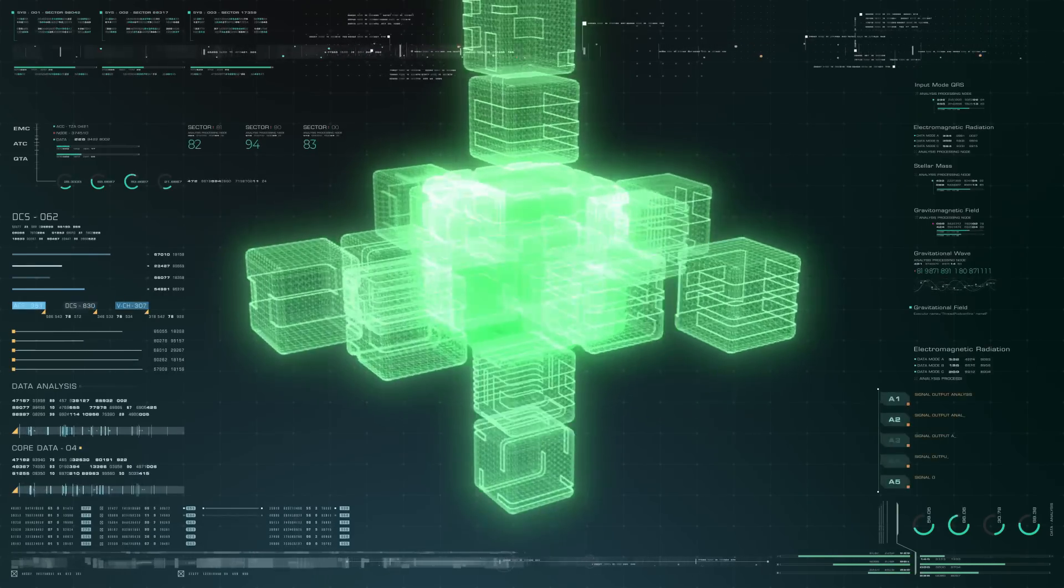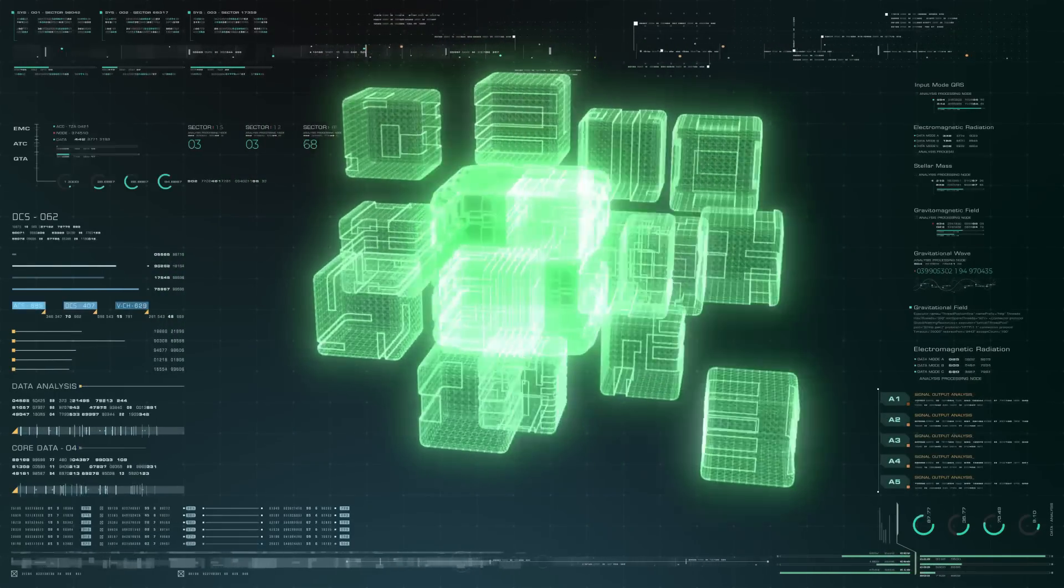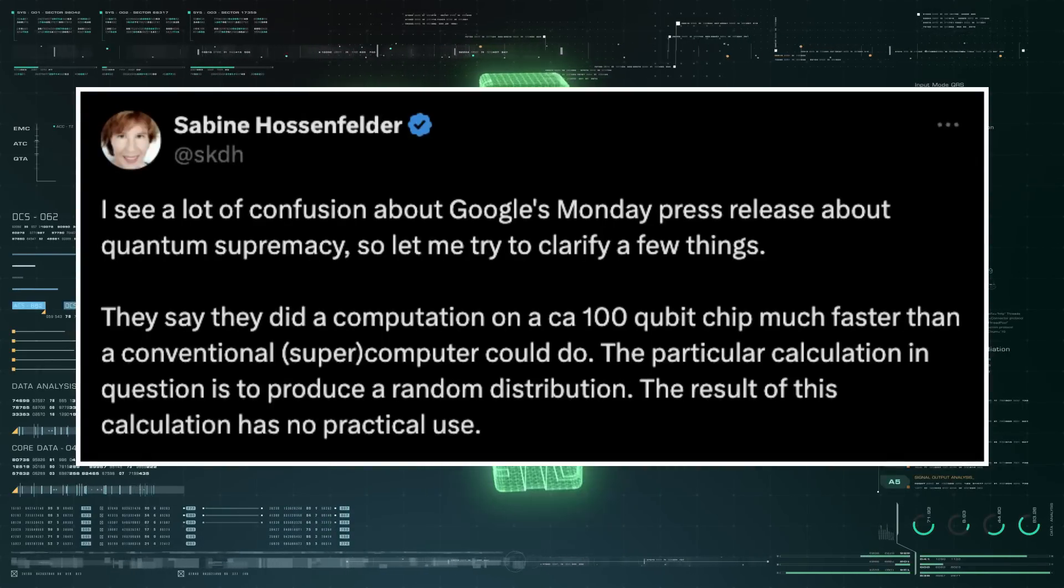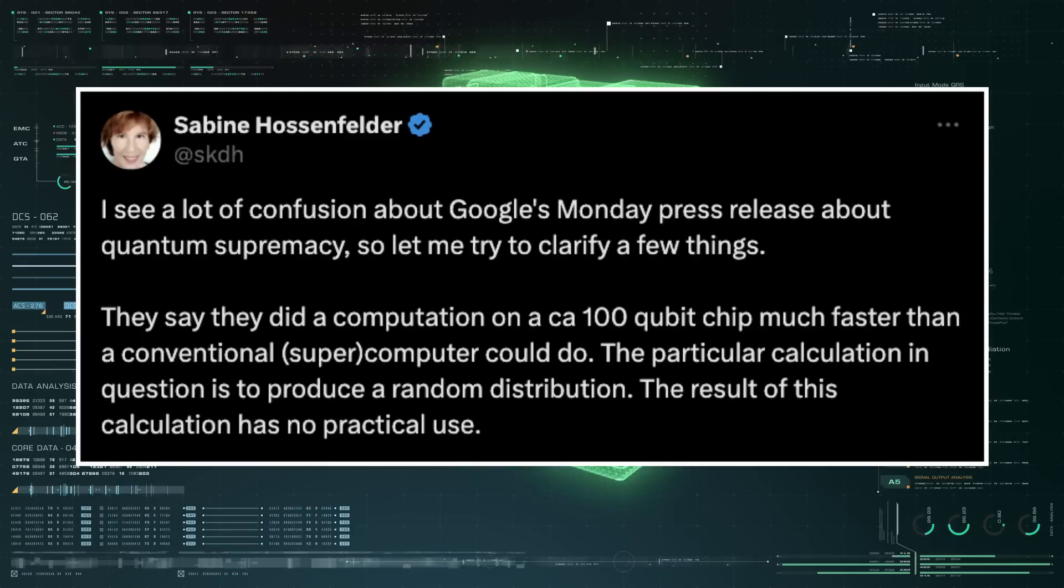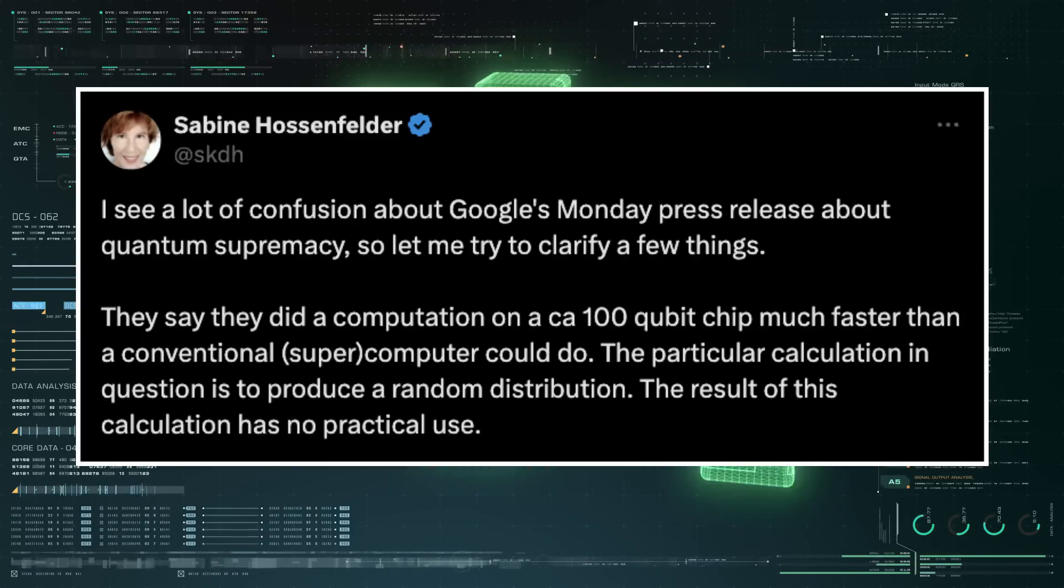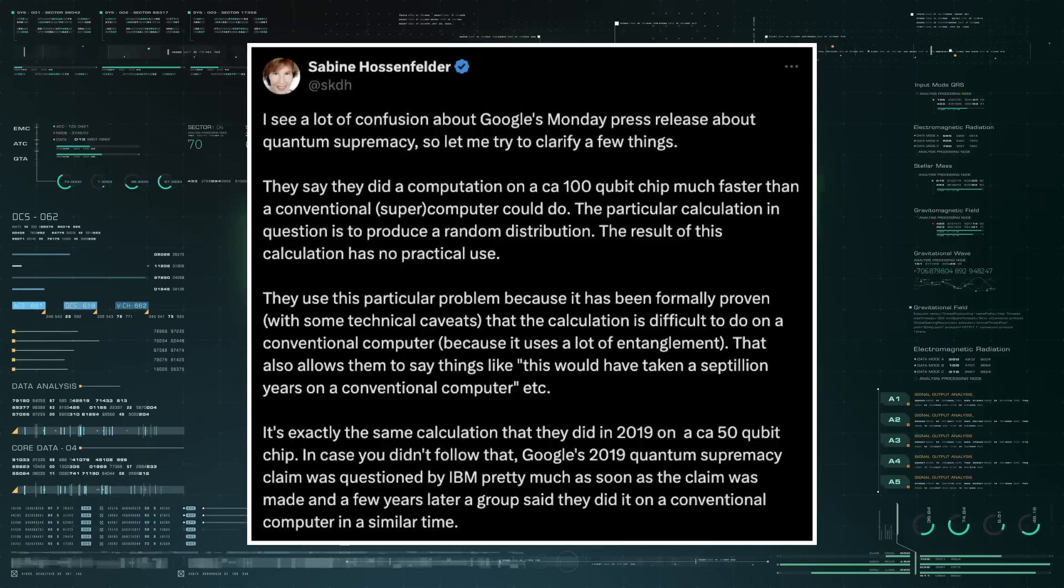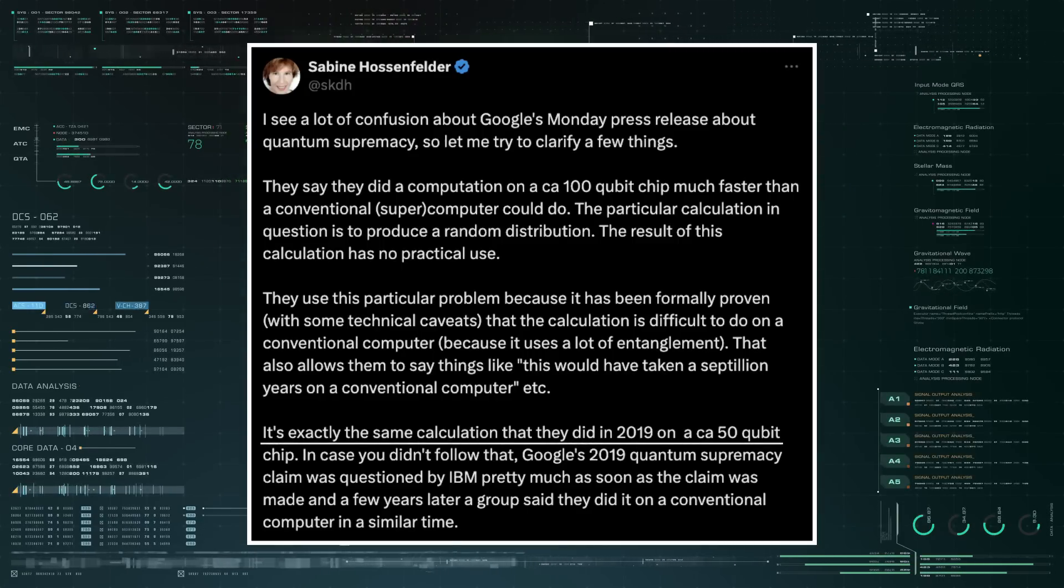For one, the calculation Willow was designed to solve didn't have any immediate practical applications. The particular calculation in question is to produce a random distribution. German physicist Sabine Hossenfelder tweeted in response to Google's announcement, 'The result of this calculation has no practical use. It's exactly the same calculation that they did in 2019 on a circa 50 qubit chip.'